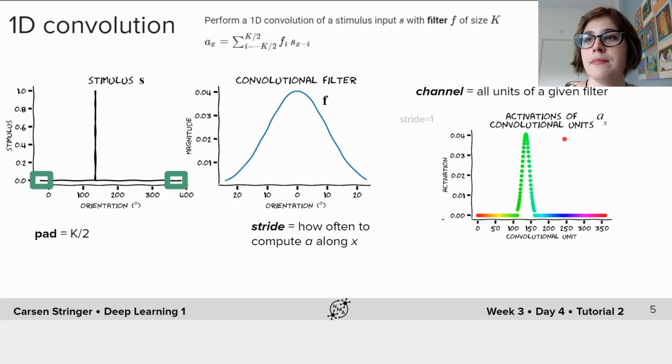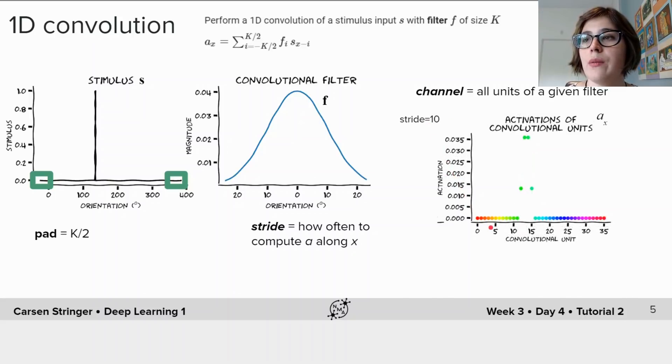In this case we use a stride of one, we have a different unit for every single position along the stimulus axis x. But we could also use a stride of 10 where we have fewer responses that are more spread out here, and this can be advantageous in terms of efficiency if you want to reduce the amount of computation that you have to do.